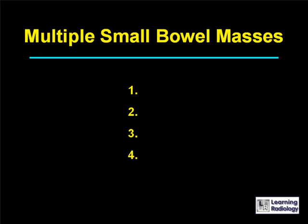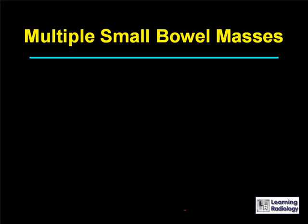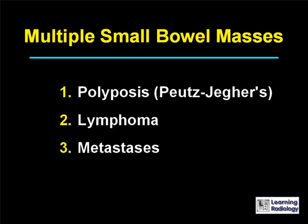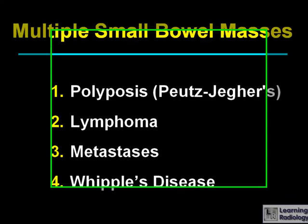The differential is for multiple small bowel masses. There are four causes: a polyposis syndrome such as Peutz-Jeghers, lymphoma, metastases to the small bowel, and Whipple's disease.